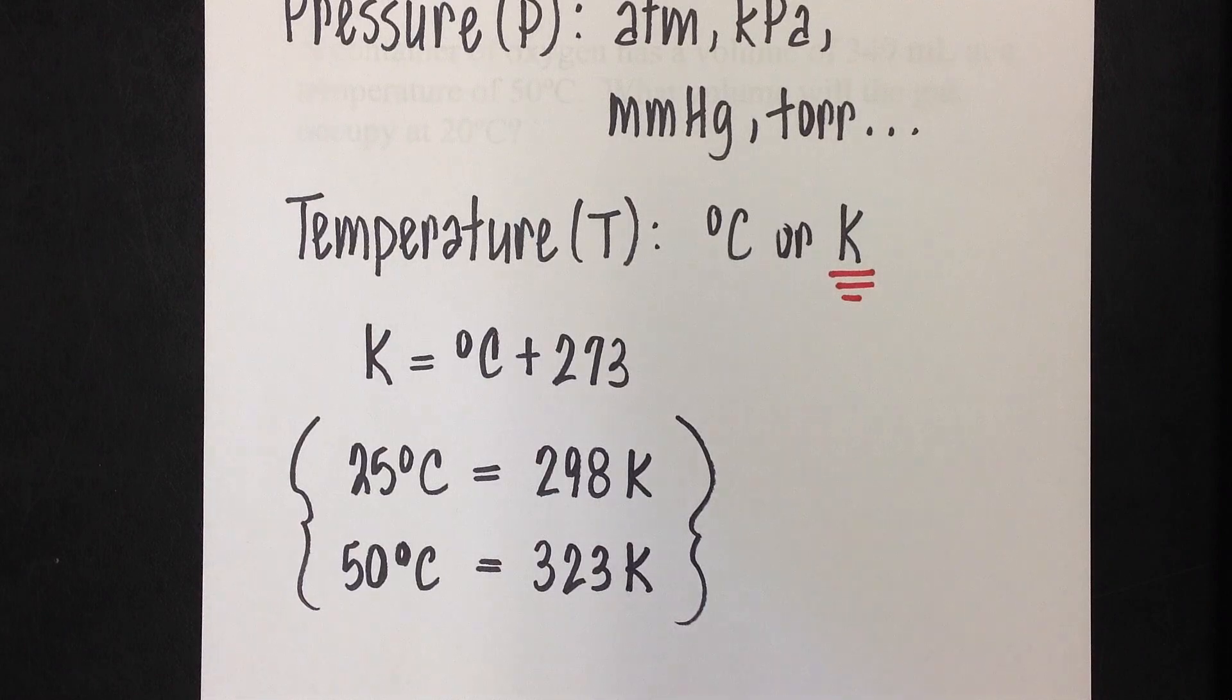The reason that's important is that for the basic gas laws, you can put volume and pressure into the equation with a variety of different units. But temperature has to be in Kelvin. So if they give you a Celsius temperature, you're going to have to convert it to Kelvin before you plug in.